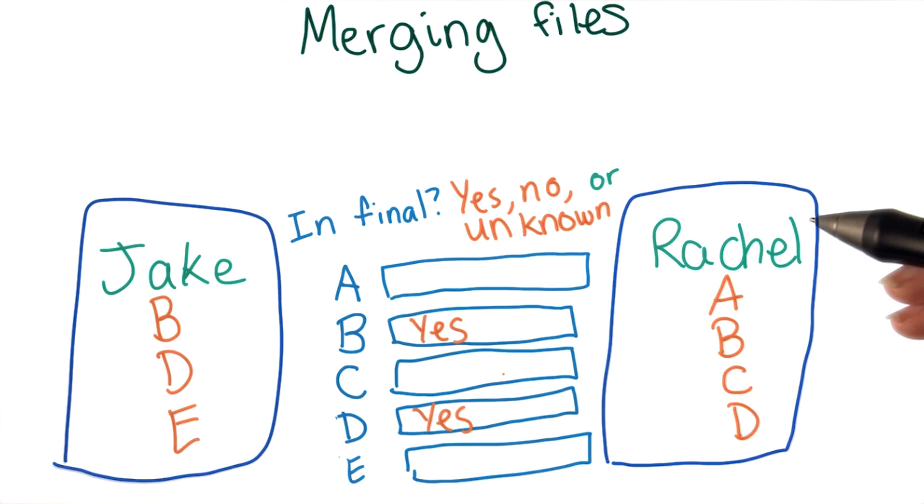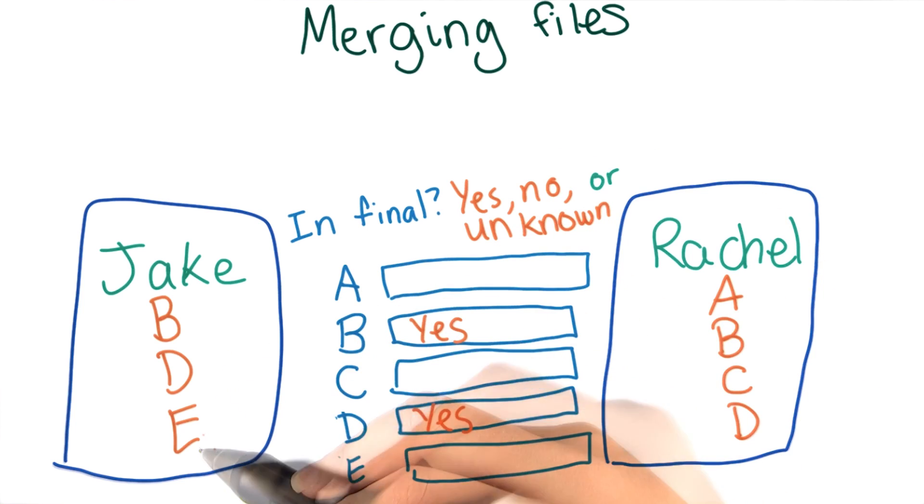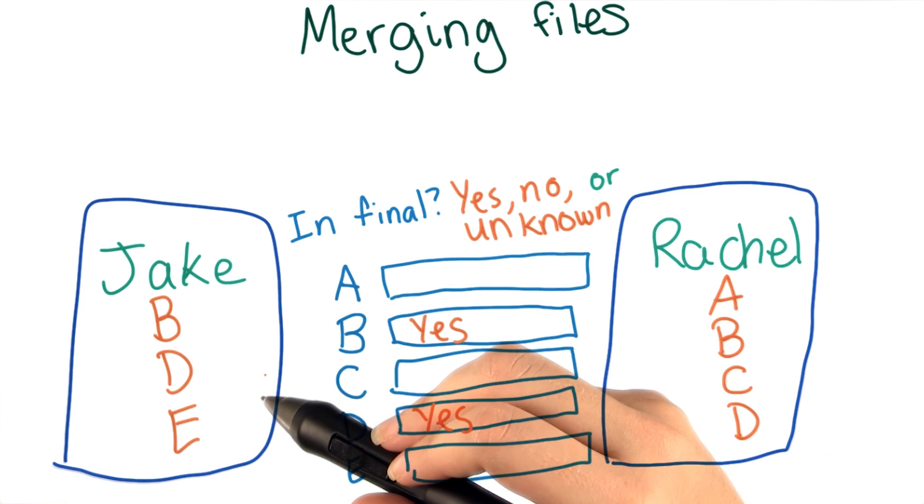But it's also possible that the original line did contain A and Jake deleted it. In that case, the final version shouldn't contain A.